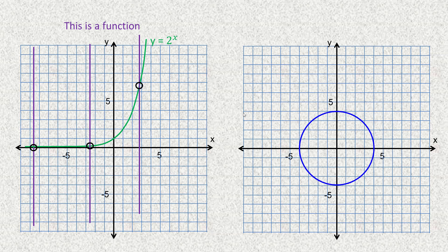Let's take a look at an example that's not a function. This is the graph of a circle. If you want to know the equation, it's x squared plus y squared equals 16 — a circle with a center at the origin and a radius of 4, since the square root of 16 is 4. So it goes through 4 and negative 4 on both axes. If we draw a line through there, notice it cuts through here and it also cuts through here on the same line. So because that line cuts in two places, we say this is not a function.